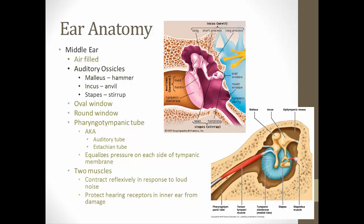The stirrup is connected to the oval window, and another structure associated with the middle ear is the round window. The pharyngotympanic tube is the formal name for the auditory tube or Eustachian tube. The name makes sense because it links the middle ear — the tympanic portion — to the pharynx. So pharyngotympanic really is a good name, connecting the pharynx to the tympanic area of the ear.